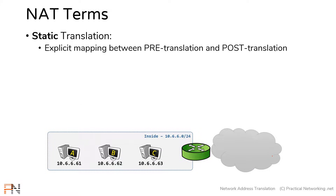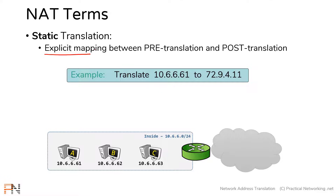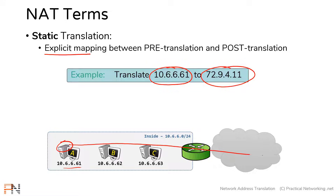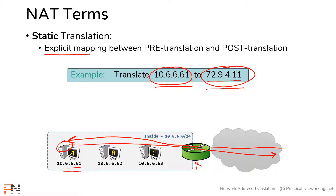So let me show you what a static translation looks like. A static translation is an explicit mapping between pre-translation attributes and post-translation attributes. An example would be configuring my router to translate the IP address 10.6.6.1, which is host A's IP address, to the IP address 72.9.4.11. Whenever host A sends a packet to the internet, the router replaces host A's source IP address with 72.9.4.11, and on the way back, the router reverses it. That is an example of a static translation.